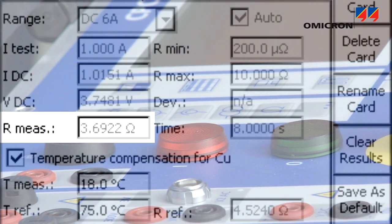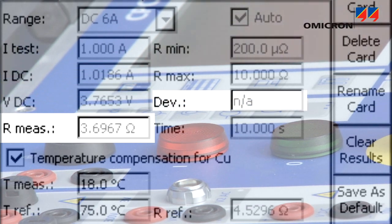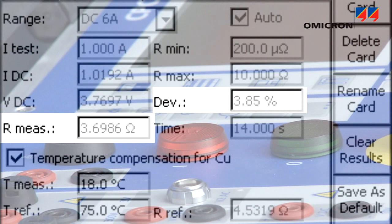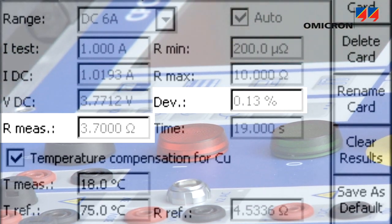Then it updates the value every second and displays the difference between two subsequent values. As soon as the inductance of the winding is charged, the resistance value stabilizes to represent the winding resistance.